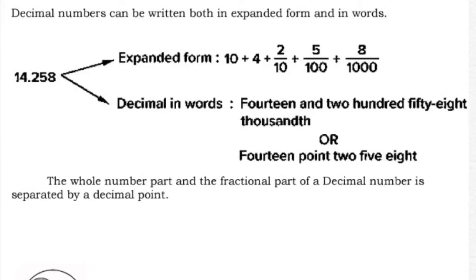Decimal numbers can be written in expanded form and in words. For example, 14.258 in expanded form is 10 plus 4 plus two tenths plus five hundredths plus eight thousandths. In words, this is '14 and 258 thousandths' or '14 point 258.' The whole number part and the fractional part of a decimal number are separated by a decimal point.